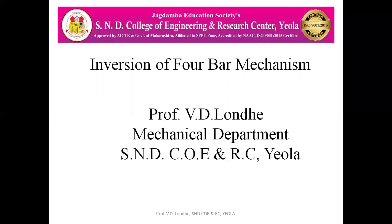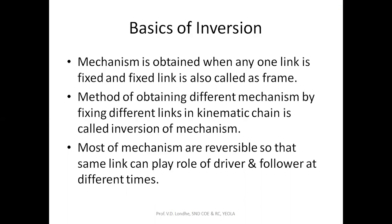Hello everyone. Today we are going to see the inversions of 4-bar chain mechanism. A mechanism is the combination of links in which any one link is fixed and other links will have relative motion. The fixed link is also called as the frame. Inversion is when, for a given mechanism, we fix different links to get different outputs, presenting different mechanisms. Such a phenomenon is called inversion of mechanism.